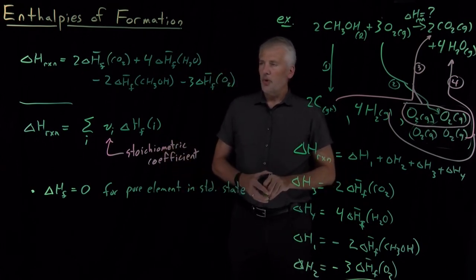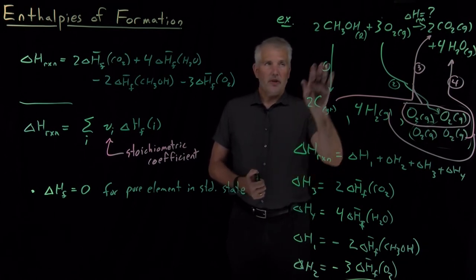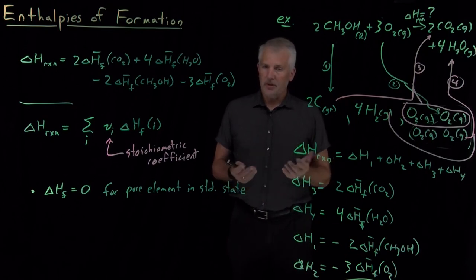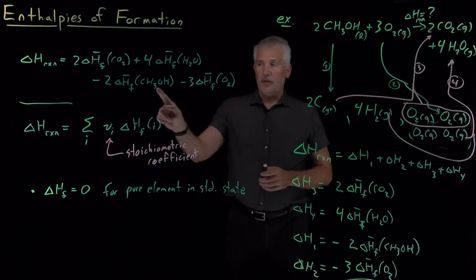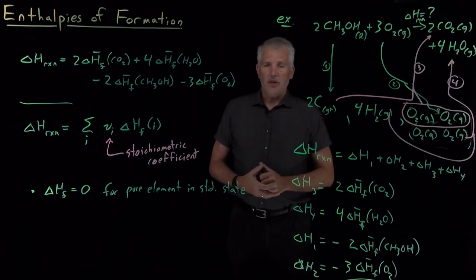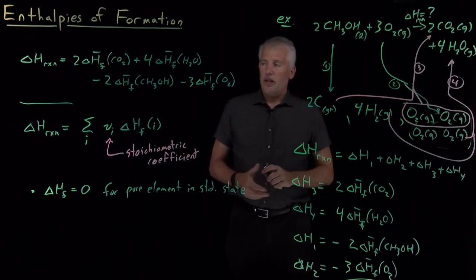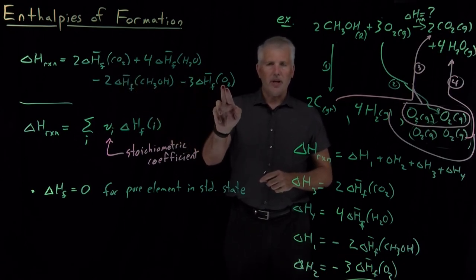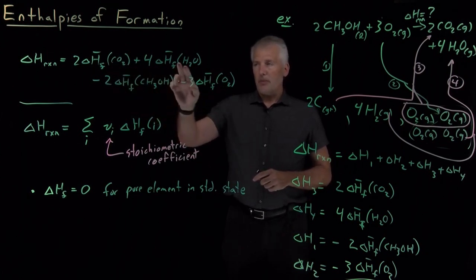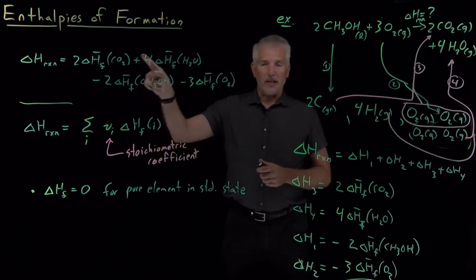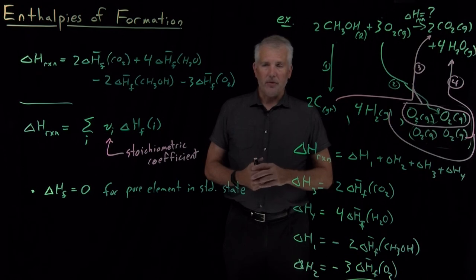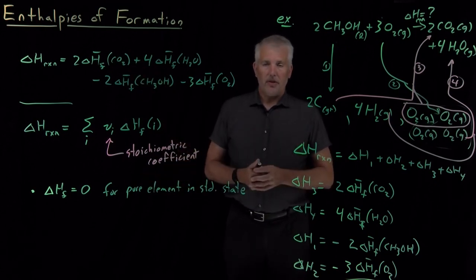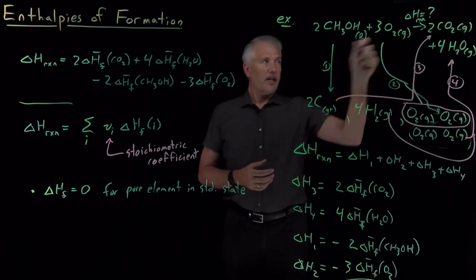The other useful point is that all we need to calculate the enthalpy of reaction for any reaction we can write down — whether or not anyone has performed that experiment in a lab — is just the heats of formation. There are long tables of enthalpies of formation for different compounds, but once we've tabulated the enthalpy of formation for methanol, CO2, and H2O, we don't even need to tabulate it for O2 because we know it's zero. Tabulating enthalpies of formation for a large list of compounds is much easier than tabulating enthalpies of reaction for a nearly infinite list of possible chemical reactions. Now that we know how to use these enthalpies of formation, we can look up values in a table and use them to calculate enthalpies of reaction for just about anything.